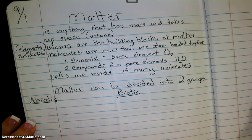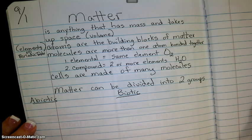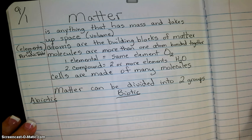Matter could be divided into two groups. We could say there's abiotic matter, non-living, never was living, not made of cells. And there's biotic matter, living, made of cells.